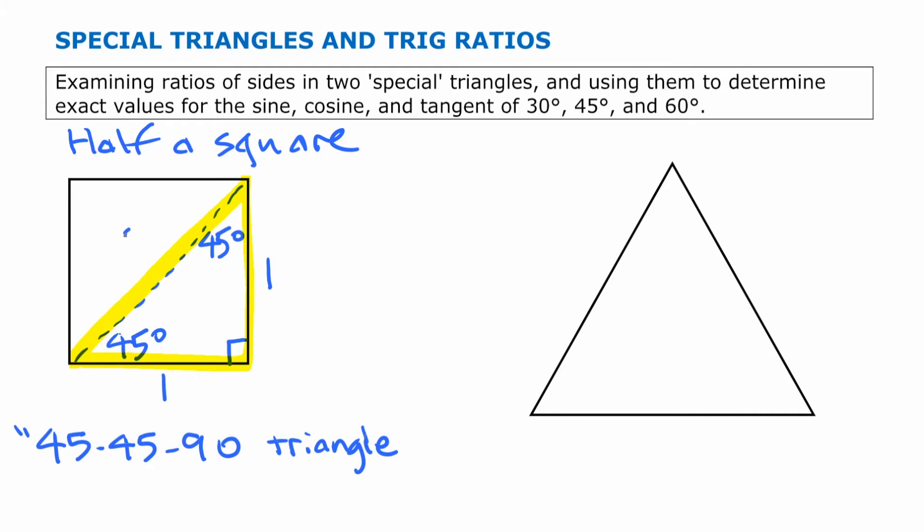If we imagine the sides are 1, then we can work out what that diagonal has to be. We call it x and use the Pythagorean relation. We get that that side has a length of square root of 2. So we are going to label it root 2. So then this triangle is also referred to sometimes as a 1, 1, root 2 triangle.